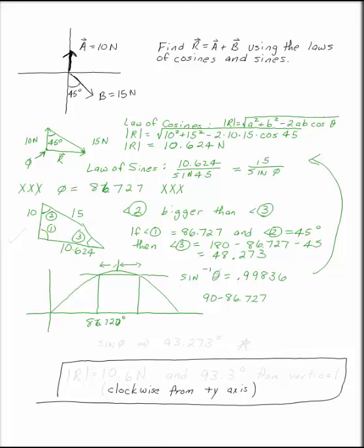We can go that same distance on the other side to get another value, another possible value for phi. The other possible value for sine of phi gives you 93.273 degrees. That's the value that we want.